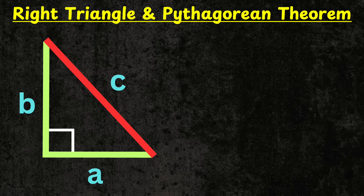Hello everyone, welcome back to Faceless Mindset. In today's lesson we are going to learn how to solve for the length of any right angle triangle using the Pythagorean theorem. I have three problems. In the first problem we are going to learn how to find the hypotenuse of a right triangle, and in the other two problems we are going to find the length of the two legs of a right triangle.